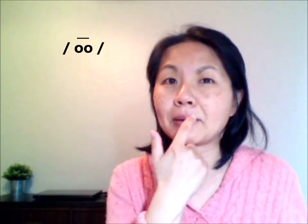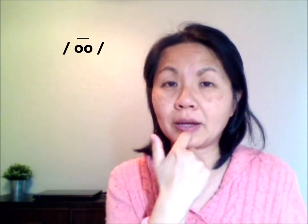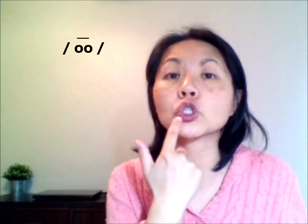Now moving on to the other sound of CRU. This one, we have to make that 'ooh' sound. So previously we made the 'uh' sound. Now here we have the 'ooh'. Notice that the shape of my lips is rounded and pointy — like you're going to kiss somebody. So 'ooh', 'ooh'.